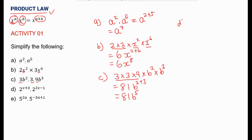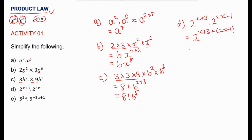For part d, our exponents have variables. We still use the same procedure — if the powers have the same base, add the exponents. So 2 to the power x plus 3 times 2 to the power 2x minus 1 becomes 2 to the power x plus 3 plus 2x minus 1. We simplify: x plus 2x is 3x, and 3 plus negative 1 is 2, so the answer is 2 to the power 3x plus 2.